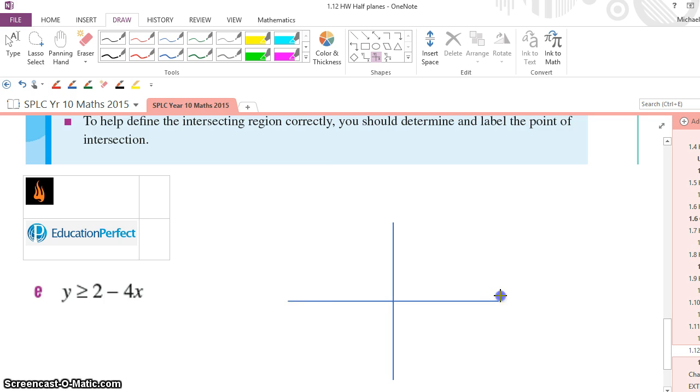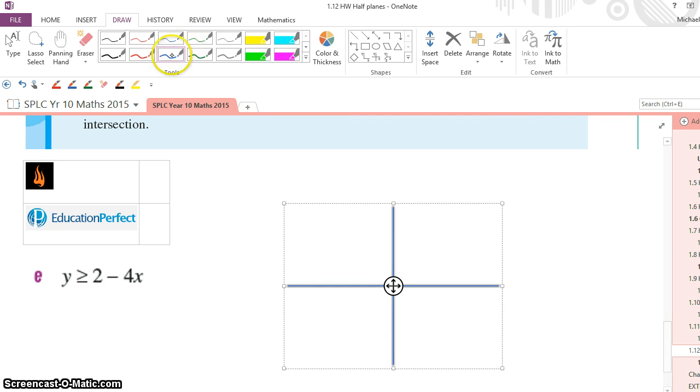Here, I've got my set of axes, all ready to go, get those arrows indicating that they go on forever, label my axes, label x, mark the origin, and I'm all set to go. So the y-intercept of this one is 2, so quite easily I go up 2, and I can mark in that point.